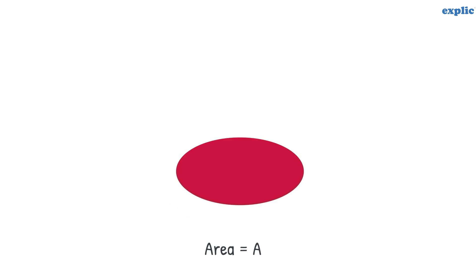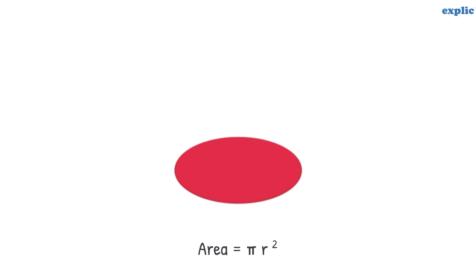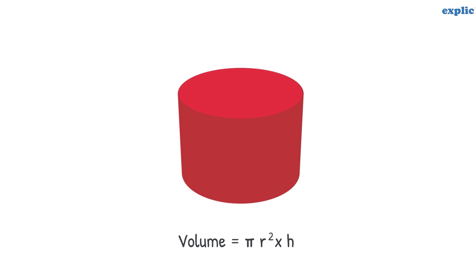In the same way, if we pile up circles of area a, it will become cylinder. Since the area of the circle is pi r square, and the height is h, the volume of the cylinder would be pi r square h.